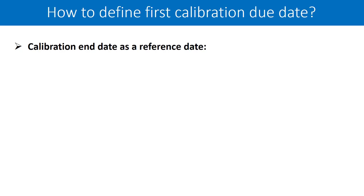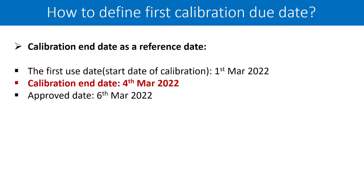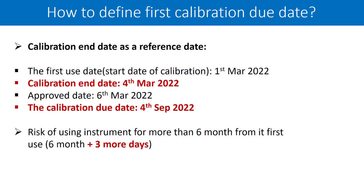Let us talk about the second approach — using the calibration end date as the reference date. The start date of calibration, meaning when the instrument was used for the very first time, is 1st March 2022. Calibration end date is 4th March 2022, and the approval date is 6th March 2022. Against the end date, adding 6 months gives a calibration due date of 4th September 2022. There is still a risk of using the instrument for more than 6 months from its first use — in this example, 3 more days of usage are possible. So this is again not a conservative approach in its nature.